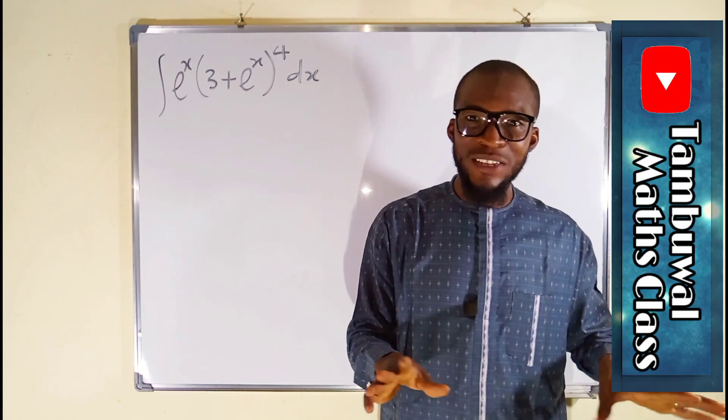Now let us substitute this information. The integral becomes: e to the x multiplied by u to the power of 4 — because we let the bracket equal u — then dx, which is 1 over e to the x, du. Let us simplify: e to the x cancels e to the x, and what we have left is just u to the power of 4 times du. So our integration is now entirely in terms of u: the integral of u to the power of 4 du.